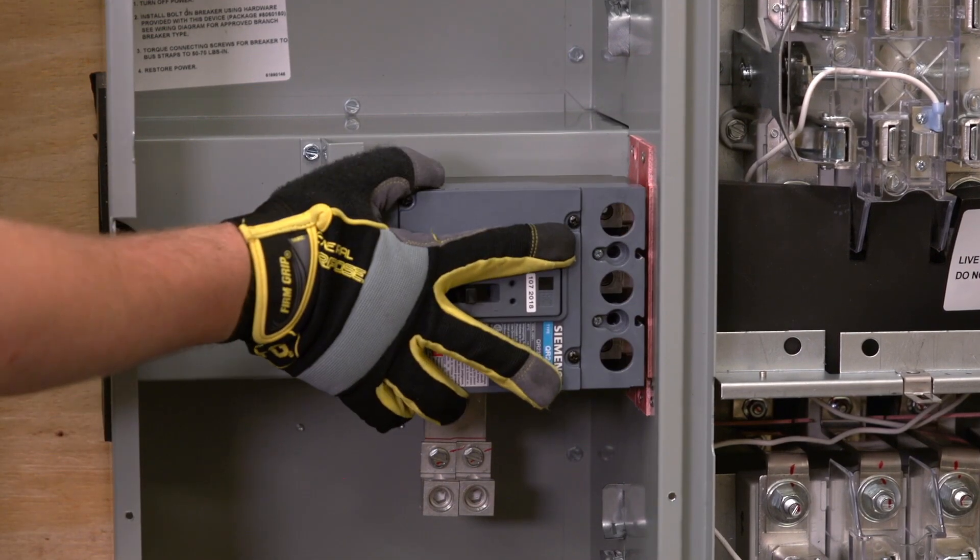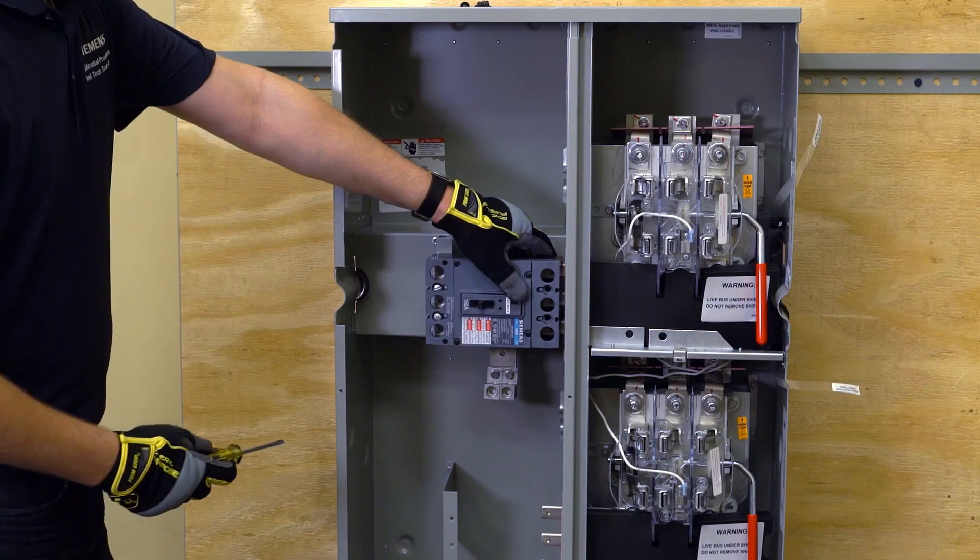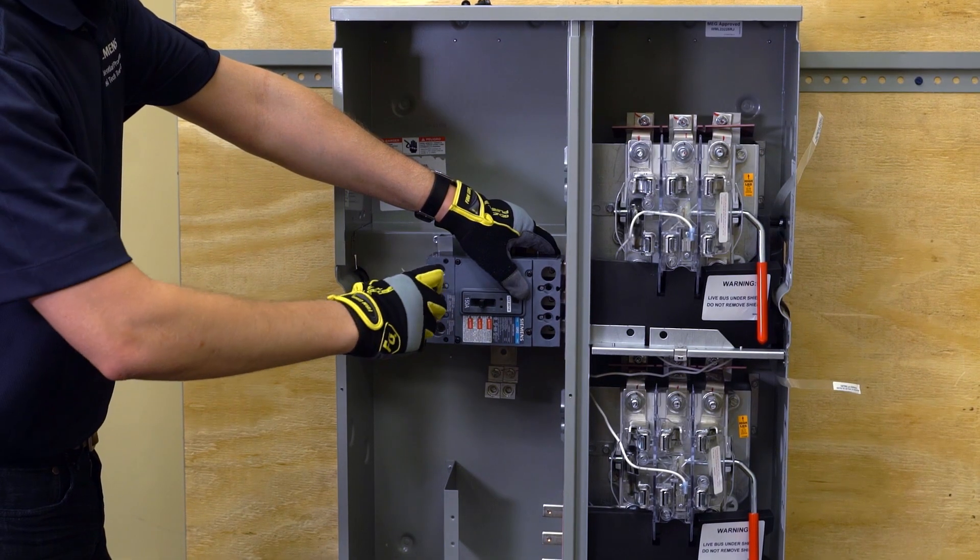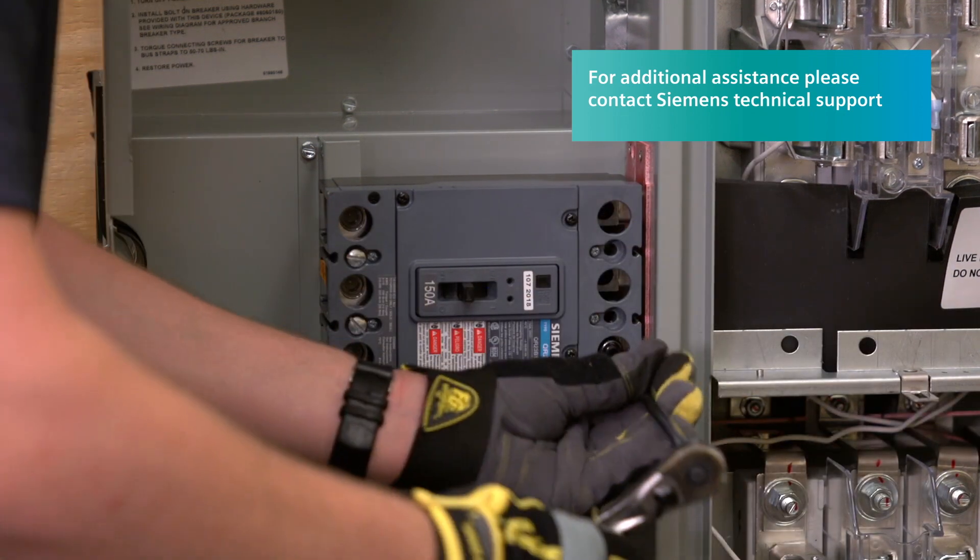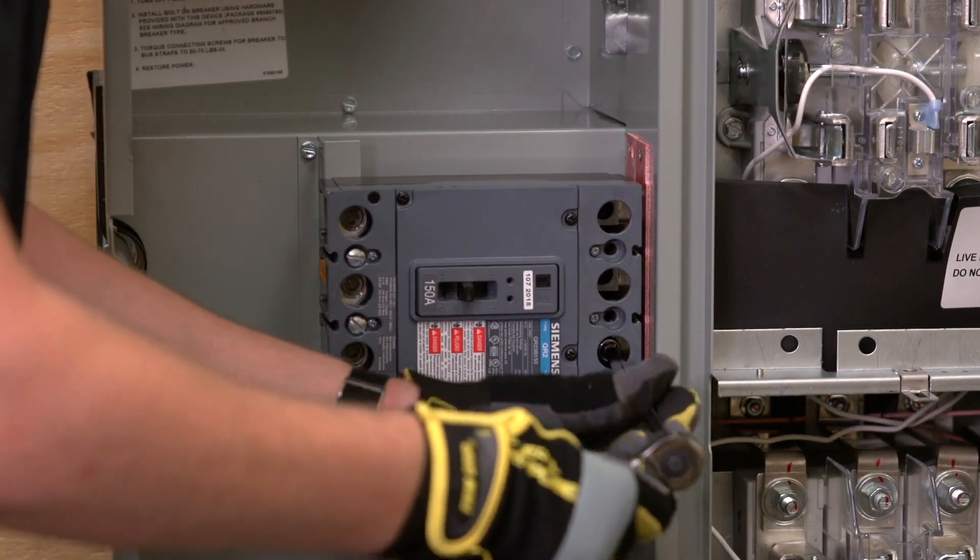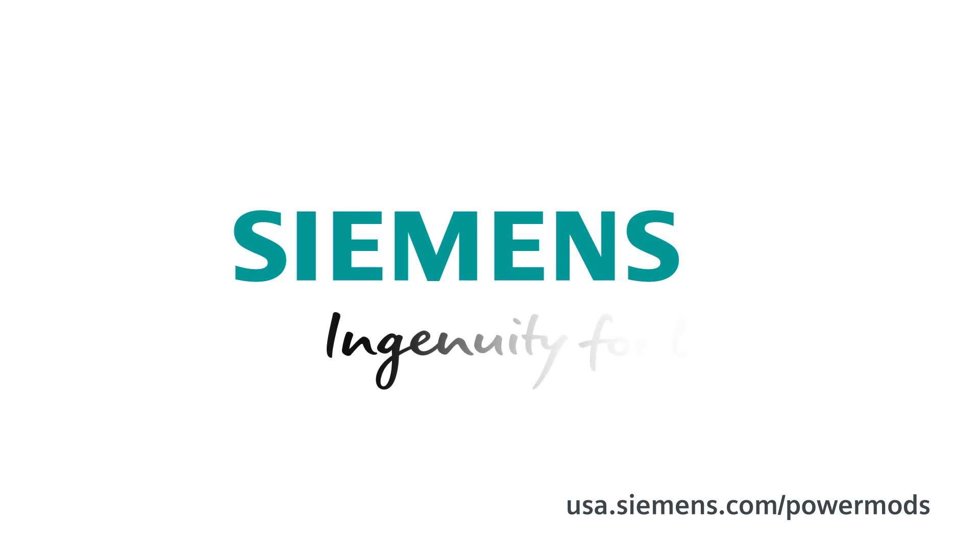To install the QR breaker, place it on the mounting base, fasten it down with the two longer screws, and then use the short black screws to fasten the phase straps to the breaker. Siemens. Ingenuity for life.